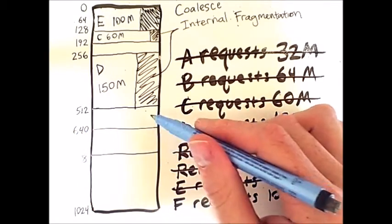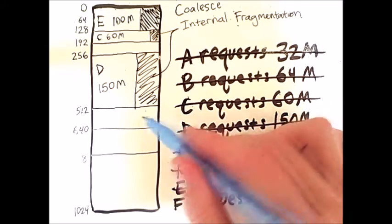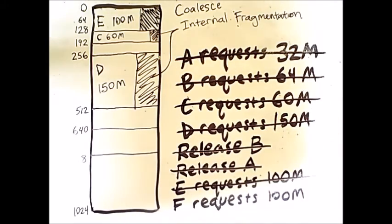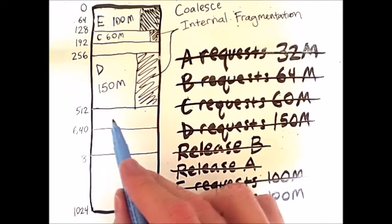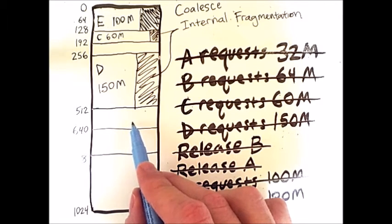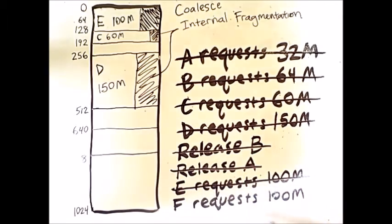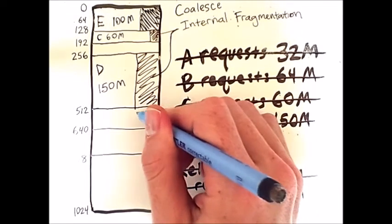And the split point for that is 640. Now these regions are both 128 megabytes large. Therefore, they're just the right size to hold this request. And we always favor the portion on top. So our 100 megabytes will go right here.